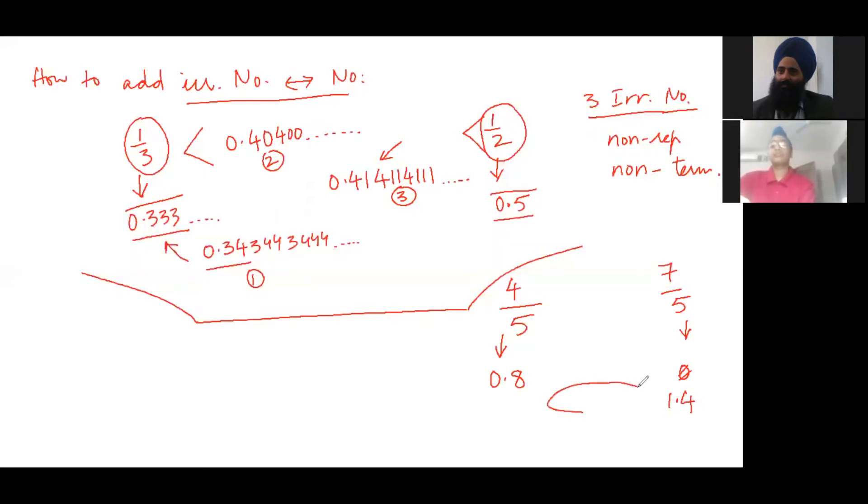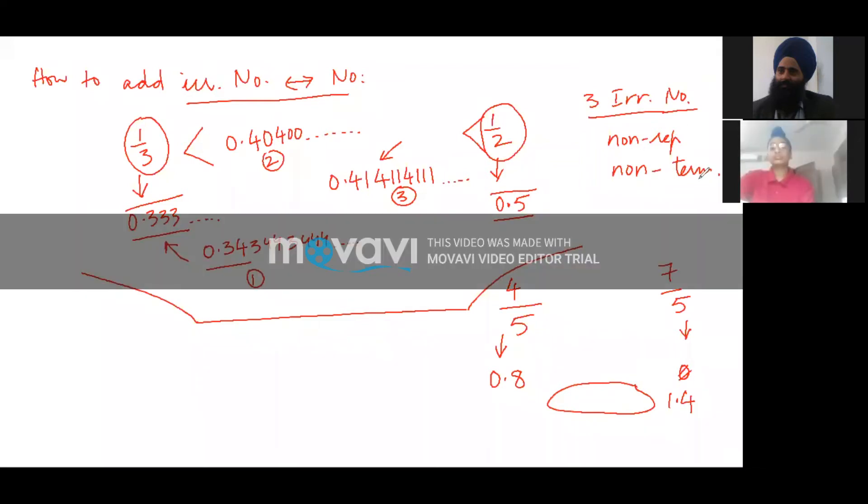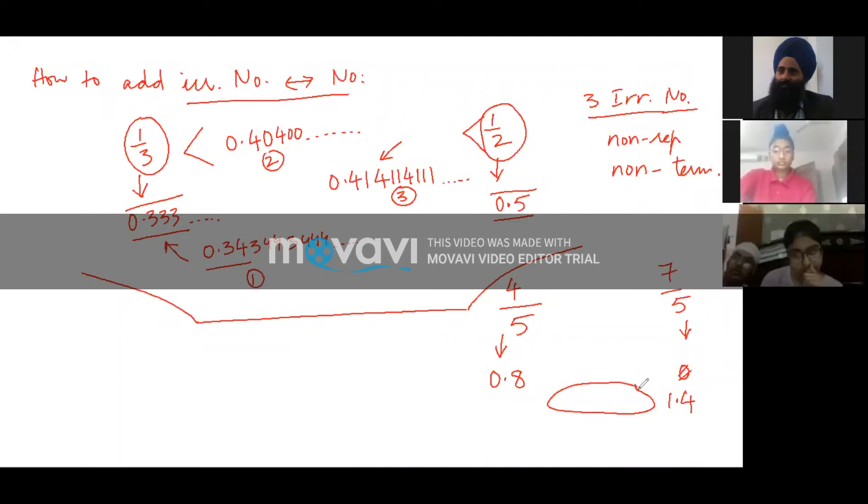All three numbers which should be irrational means they should be non-repeating as well as non-terminating. So there must be more than this and there must be less than this.